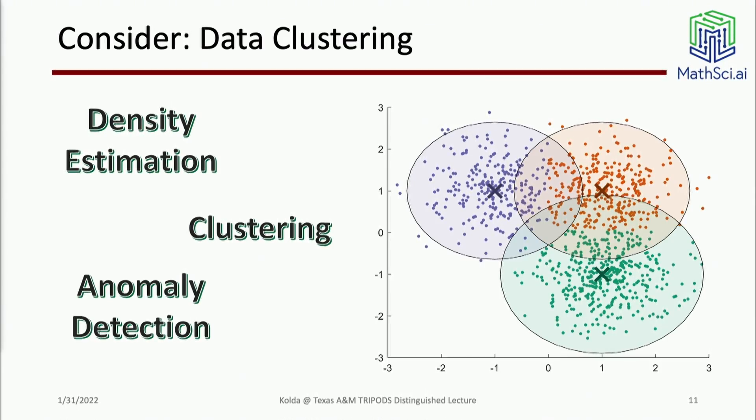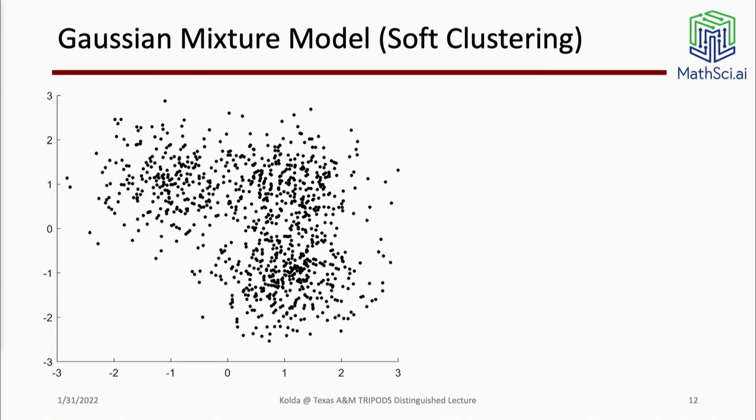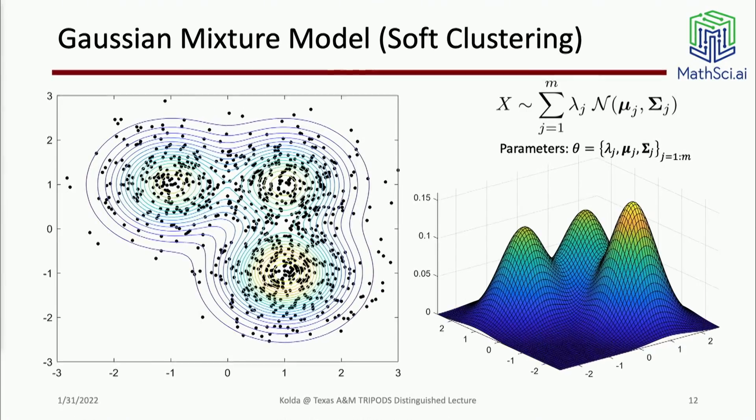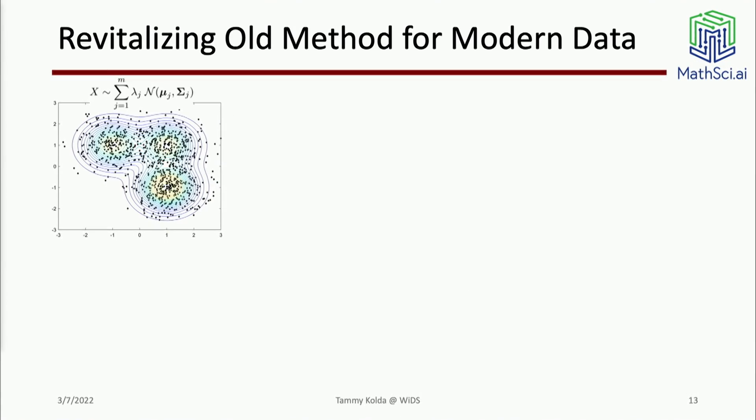Let's look at the problem of data clustering - applications in things like density estimation and anomaly detection. Here one popular model is something called Gaussian mixture model or soft clustering. You can find this in every package out there to do clustering. You want to find some model - you're basically trying to find these hills that describe your data. The top of each peak is the center of a cluster and it falls off from there. It's soft clustering because any given point you can say what's its closest peak, what's its next closest peak, and so on. The standard method to fit this type of model is something called likelihood maximization and usually use the expectation maximization algorithm.